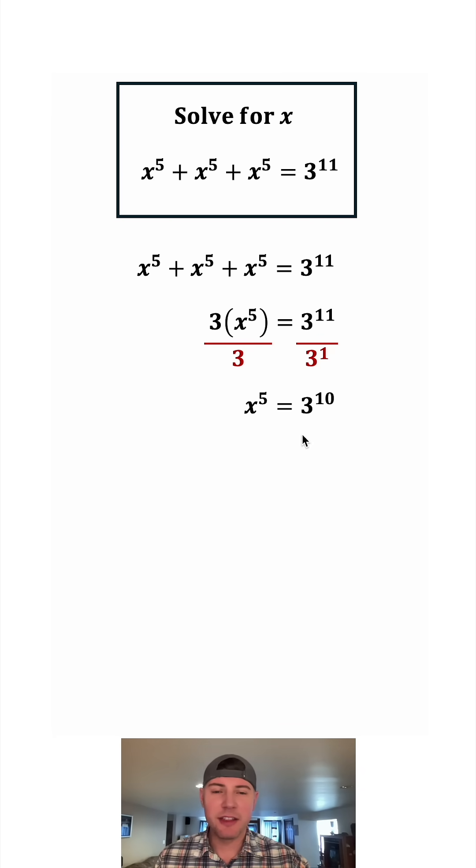So we have x to the fifth is equal to three to the tenth. Now to get the x by itself we can raise both sides to the exponent of one fifth. On the left hand side we can multiply these exponents so it's x to the five times one fifth. And five times one fifth is equal to one which leaves us with x.